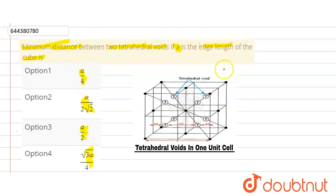So, here is the edge length. We need to find the minimum distance between two tetrahedral voids.